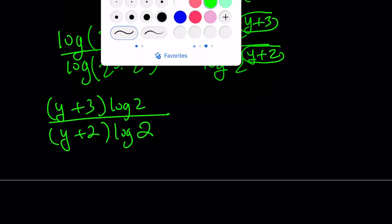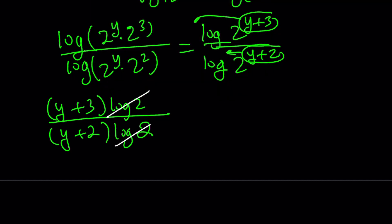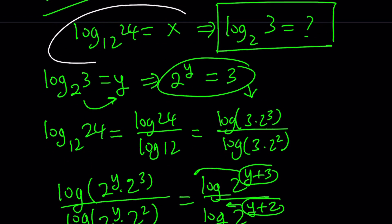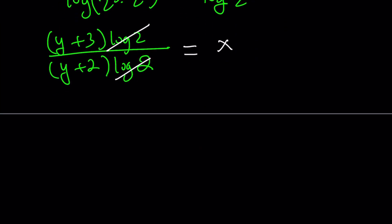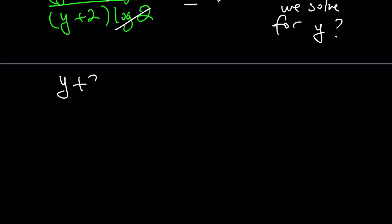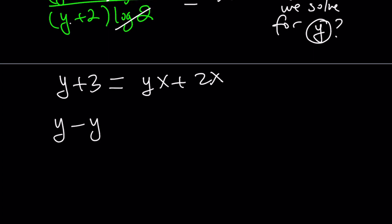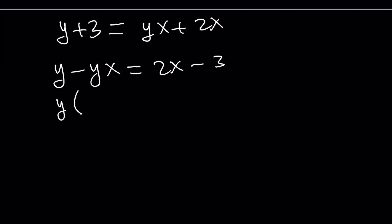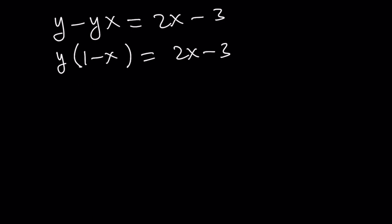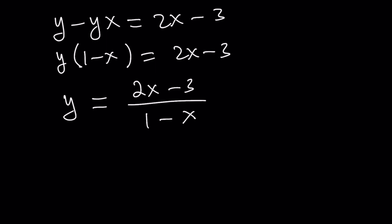Obviously, log 2 cancels out, leaving something in terms of y. But remember, this expression was equal to x — that's what's given. So let's set y plus 3 over y plus 2 equal to x and solve for y. Cross-multiplying gives yx plus 2x. Putting y terms together: y minus yx equals 2x minus 3. Factoring out y gives 1 minus x. So y equals 2x minus 3 divided by 1 minus x. Note that x does not equal 1, which we already knew.